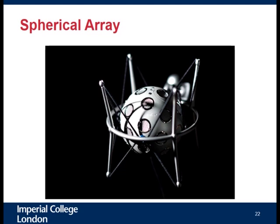Most of my time I work with spherical arrays. The nice thing about a spherical array is that because the microphones are in three dimensions — not coplanar — we can steer a beam in any direction without symmetrical ambiguities. This microphone costs about £20,000, has 32 microphones, and we use it for a lot of our research. One of the nice things about a spherical microphone array is that you can transform from the microphone signals into a different representation based on spherical harmonics.